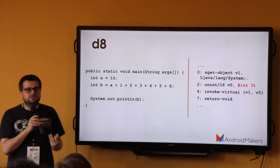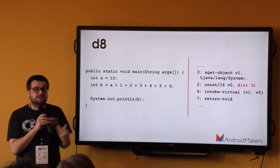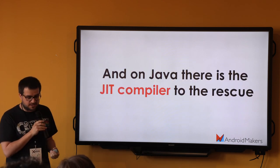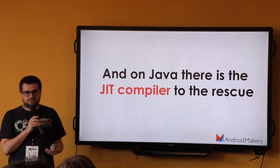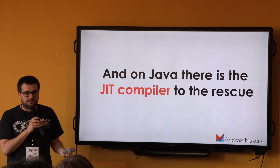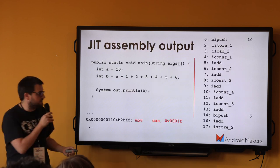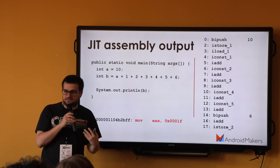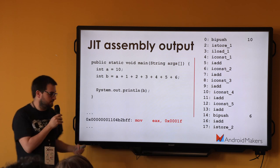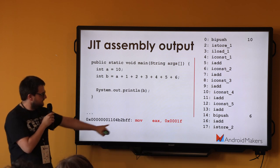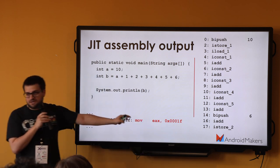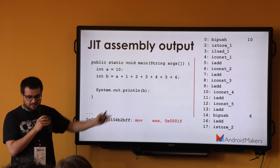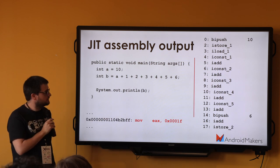What happens if we do that on a desktop machine? In Java with the just-in-time compiler, we execute and look at the resulting assembly code. At the end it's just 31. So okay, so far so good.